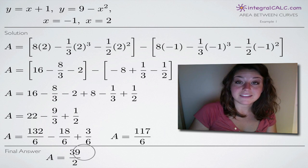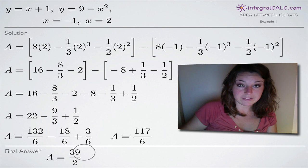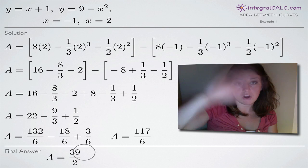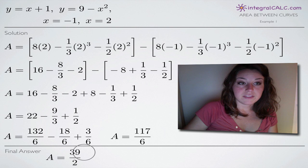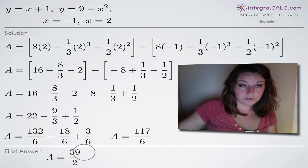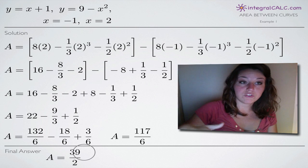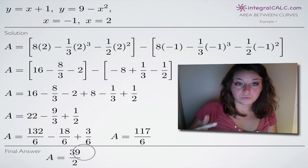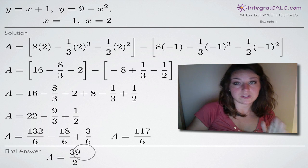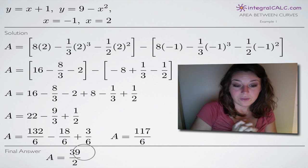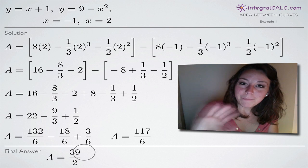39 halves is the area between the curves y equals x plus 1 and y equals 9 minus x squared on the interval x equals negative 1 and x equals 2. So I hope that helped you guys and I'll see you in the next video. Bye!